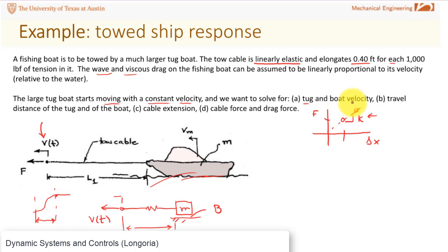Let's say we want to solve for the tug and the boat velocity. Well, we know the tug velocity, so we want to solve for the boat velocity. Maybe position also, the travel distance of both. Maybe how much the cable extends - starts off with this initial length L. And then also, what is the force in the cable? And how much force is being put on that boat?